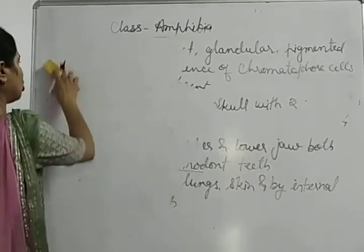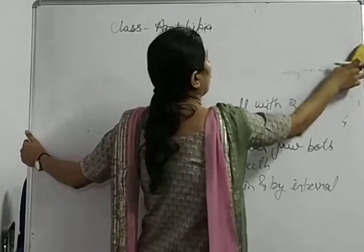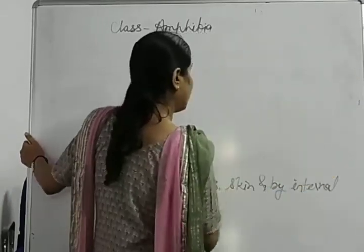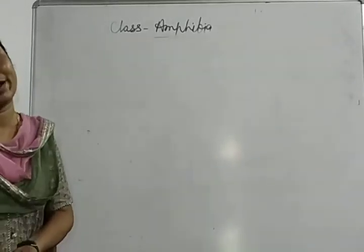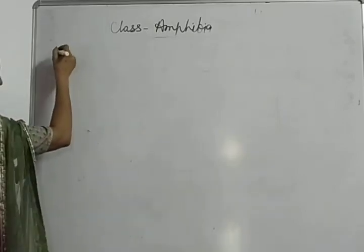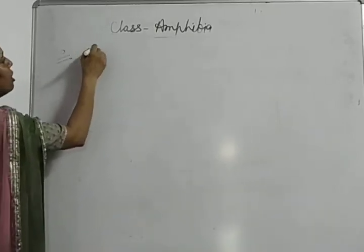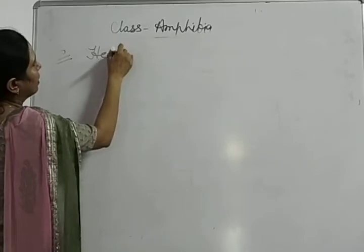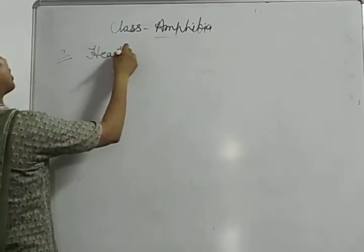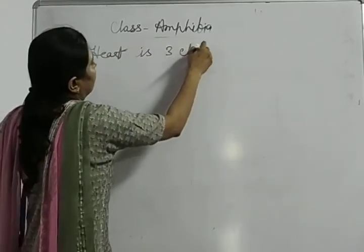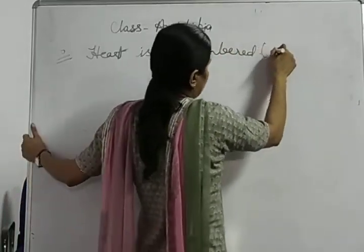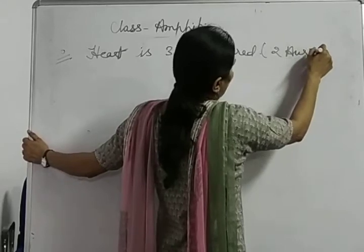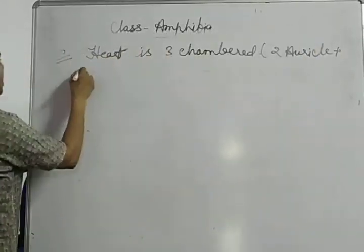In superclass Pisces the heart was two-chambered, but as evolution progressed and animals adapted to new atmospheric conditions, the heart also changed. In amphibians the heart is three-chambered — two auricles and one ventricle.